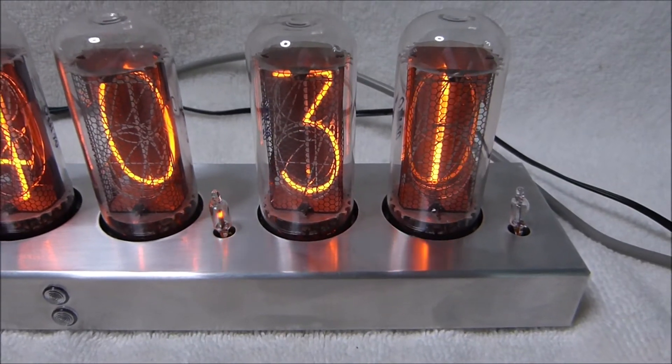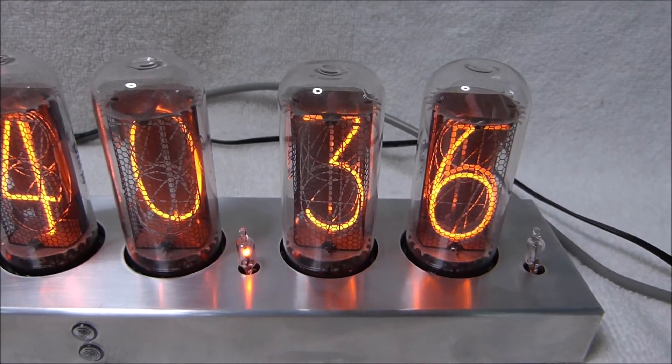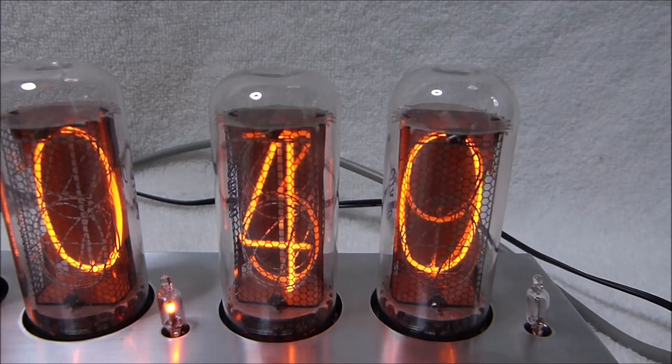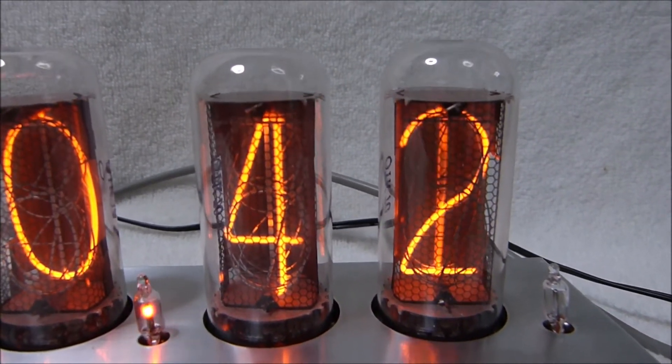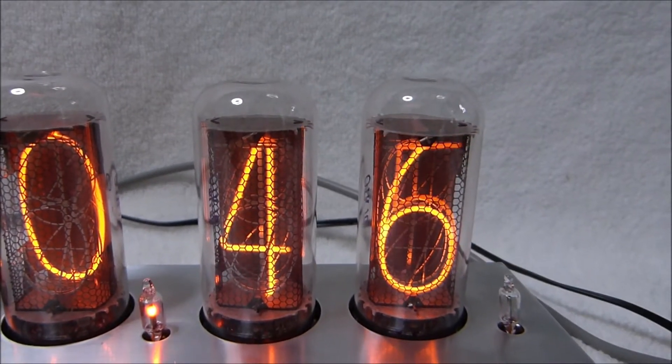The N18 Nixie tubes used in this clock are the largest ones that the Soviet Union made, and in my opinion they're also the most beautiful. The digits are nicely shaped, and unlike many of the other Soviet tubes, they use a true five instead of an upside down two as a five.